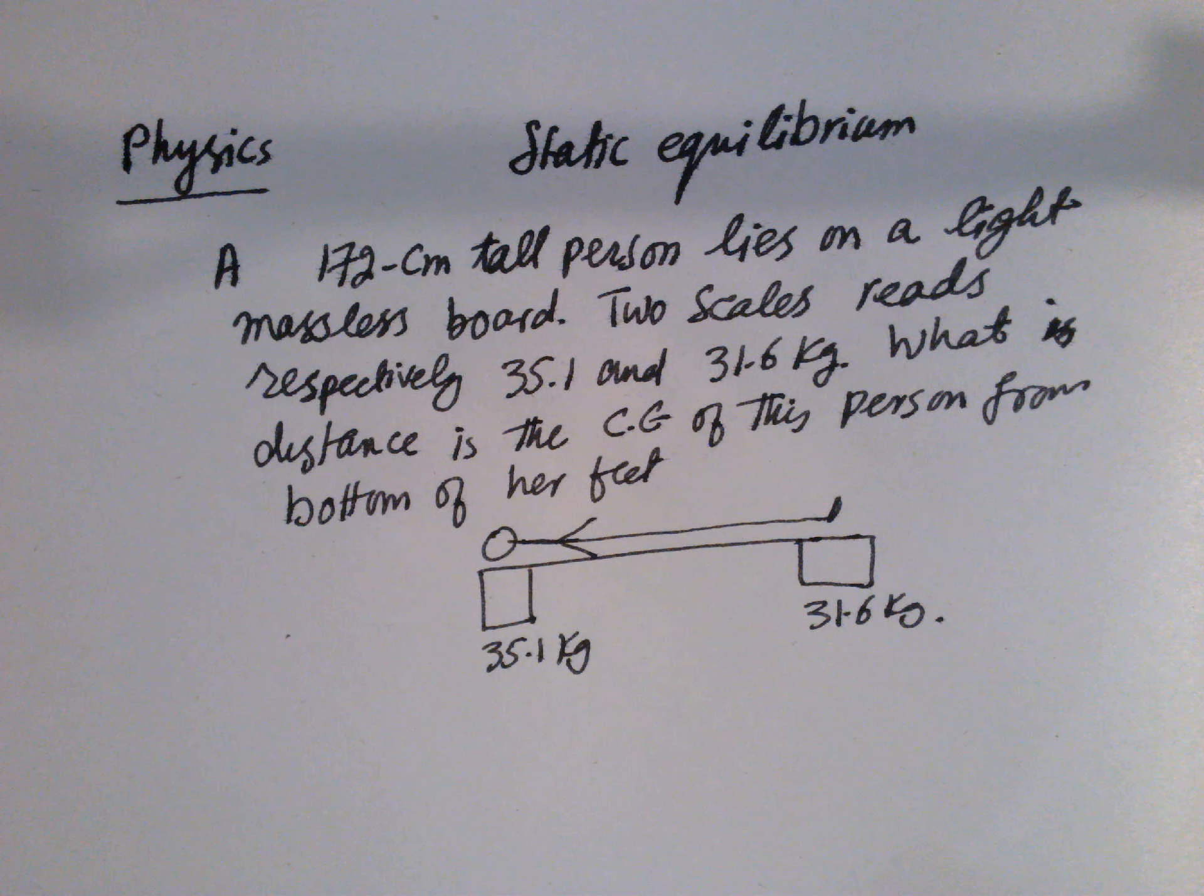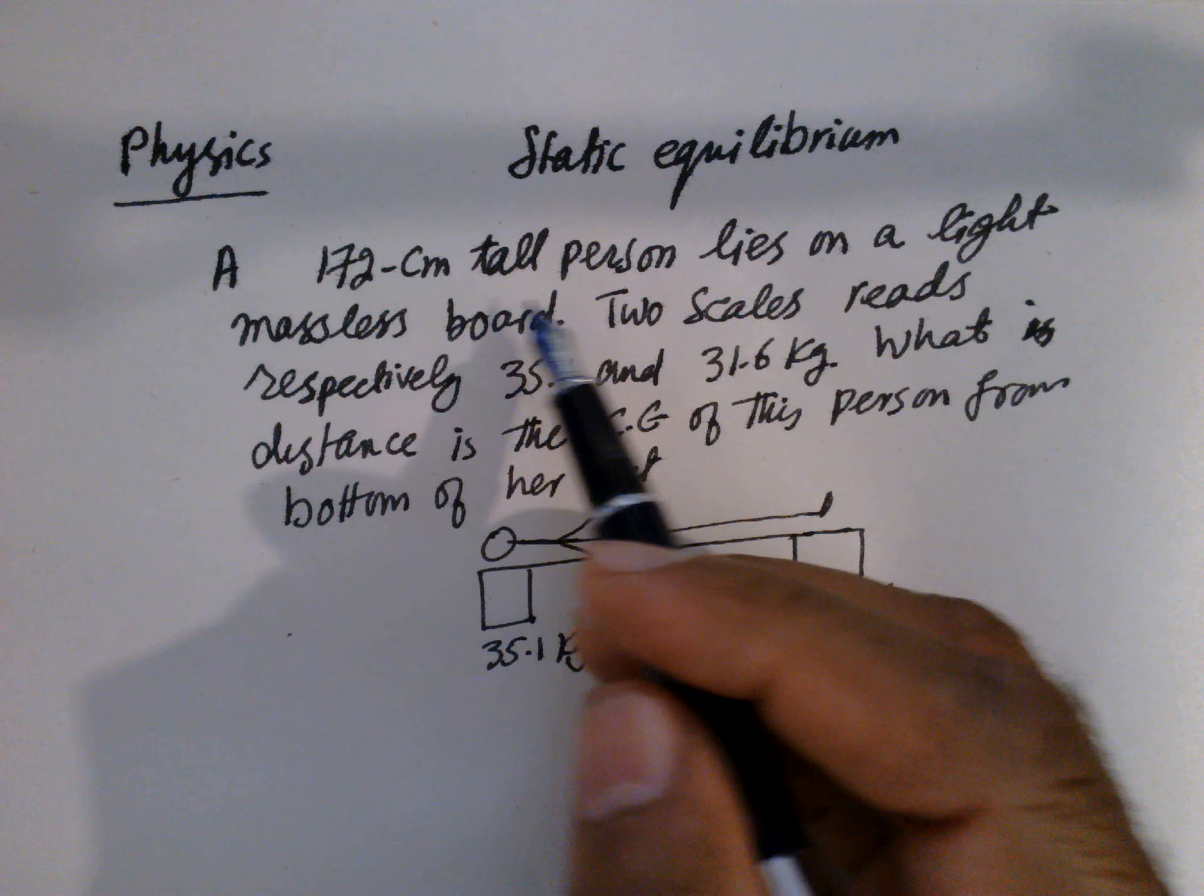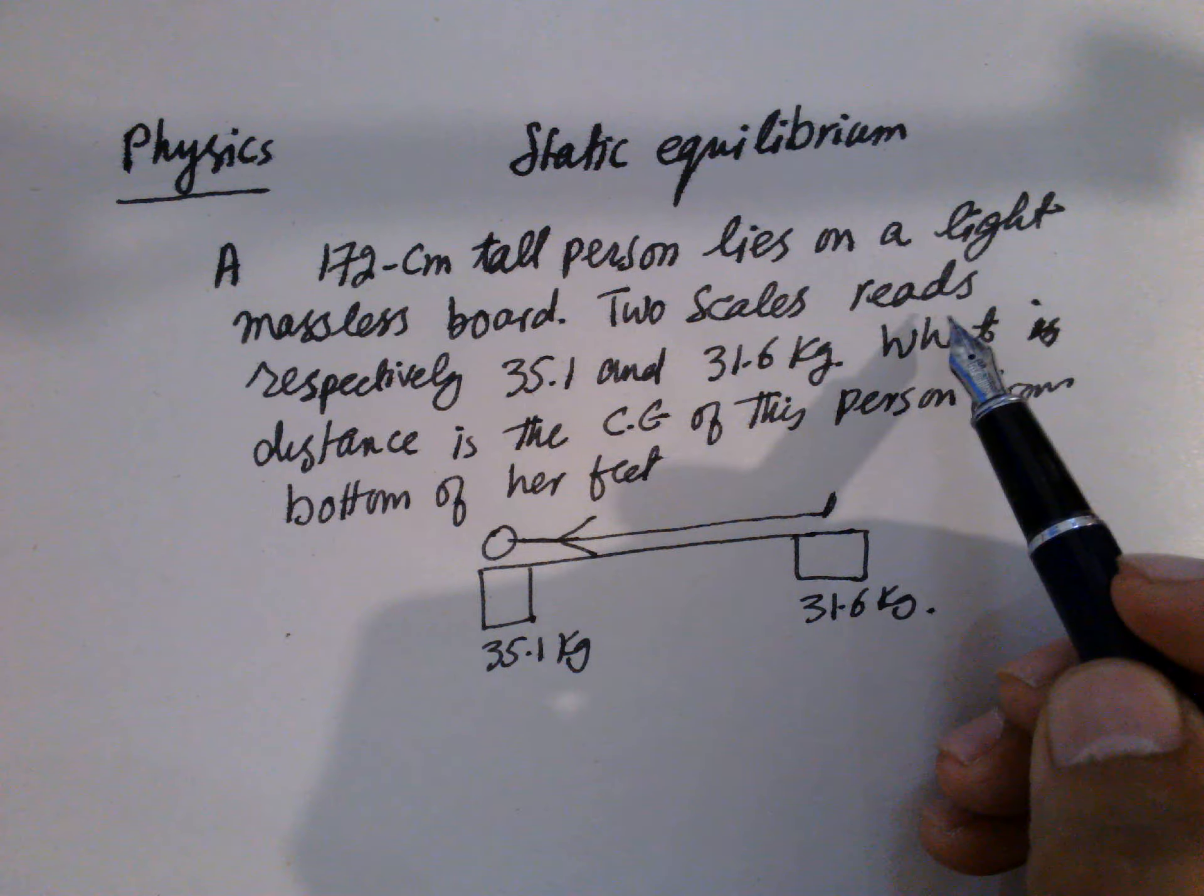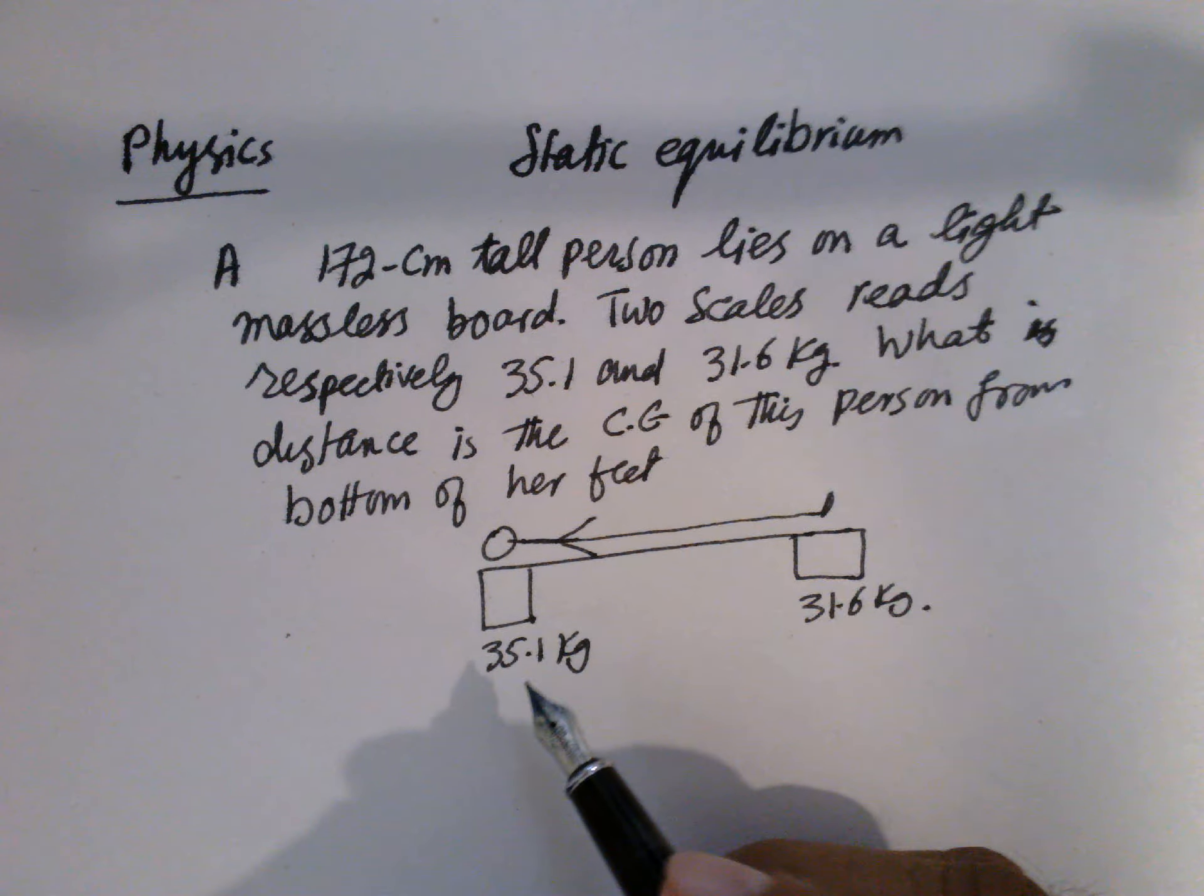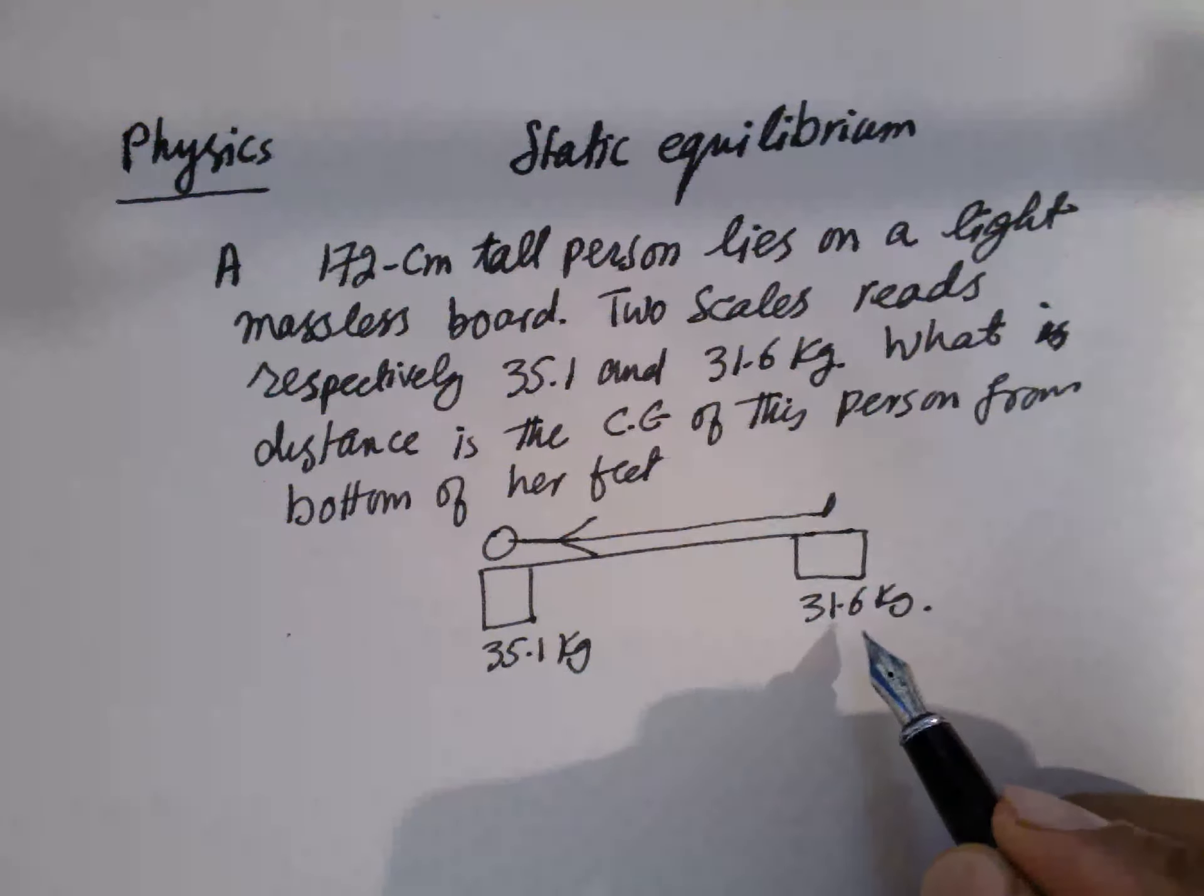Physics, Static Equilibrium. A 172 cm tall person lies on a light massless board. Two scales read respectively 35.1 kg and 31.6 kg.